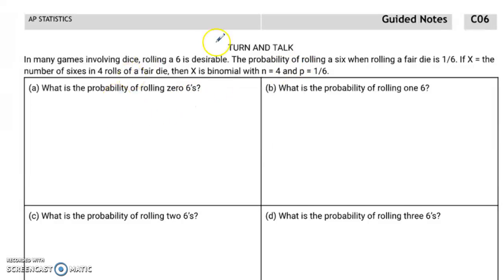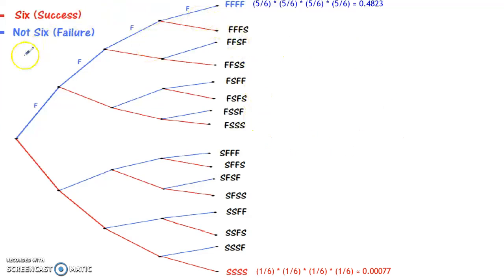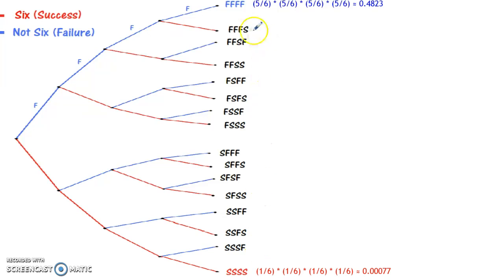On the next page, it talks about rolling a 6 on a fair die — that's the success — and rolling anything else is going to be a failure. Before answering these questions, I want to take a look at a tree diagram that summarizes this. This tree diagram gives us the sample space of all the different possible outcomes. Getting a 6 is a success, and getting a not-6 — meaning a 1, 2, 3, 4, or 5 — is a failure. This is all successes and all failures, and there's a whole spectrum of different possibilities, all with their individual probabilities.